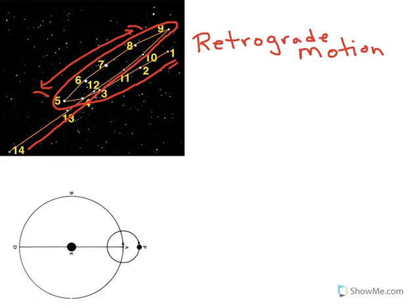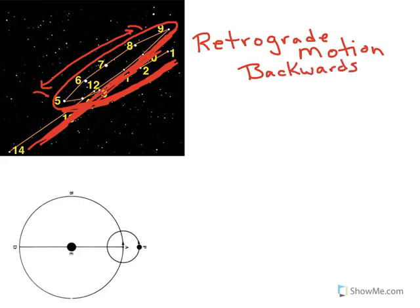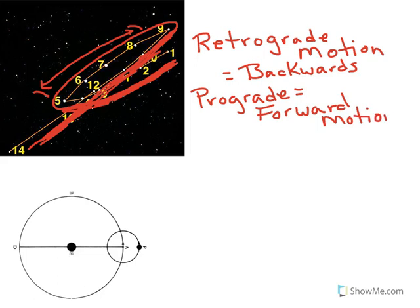And the part where it's moving forward, these two sections here, that's called prograde motion. So retrograde motion is backwards motion, prograde is forward motion. So that original model of planets going around the Earth in one direction with one speed clearly did not match the observation.